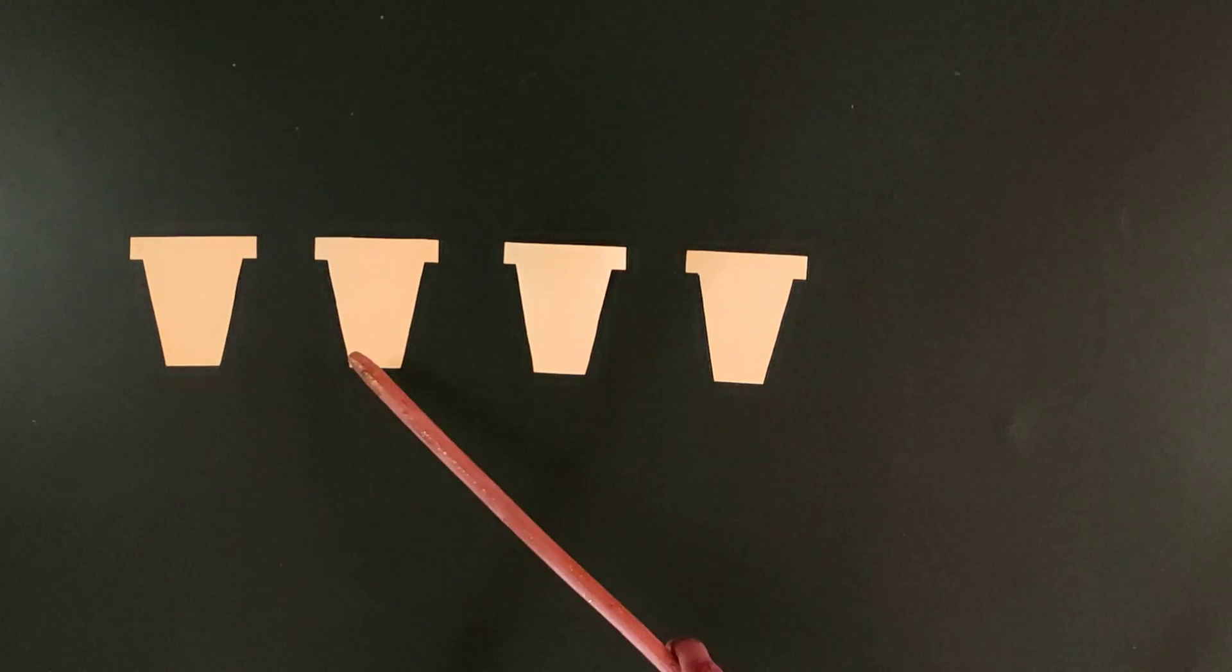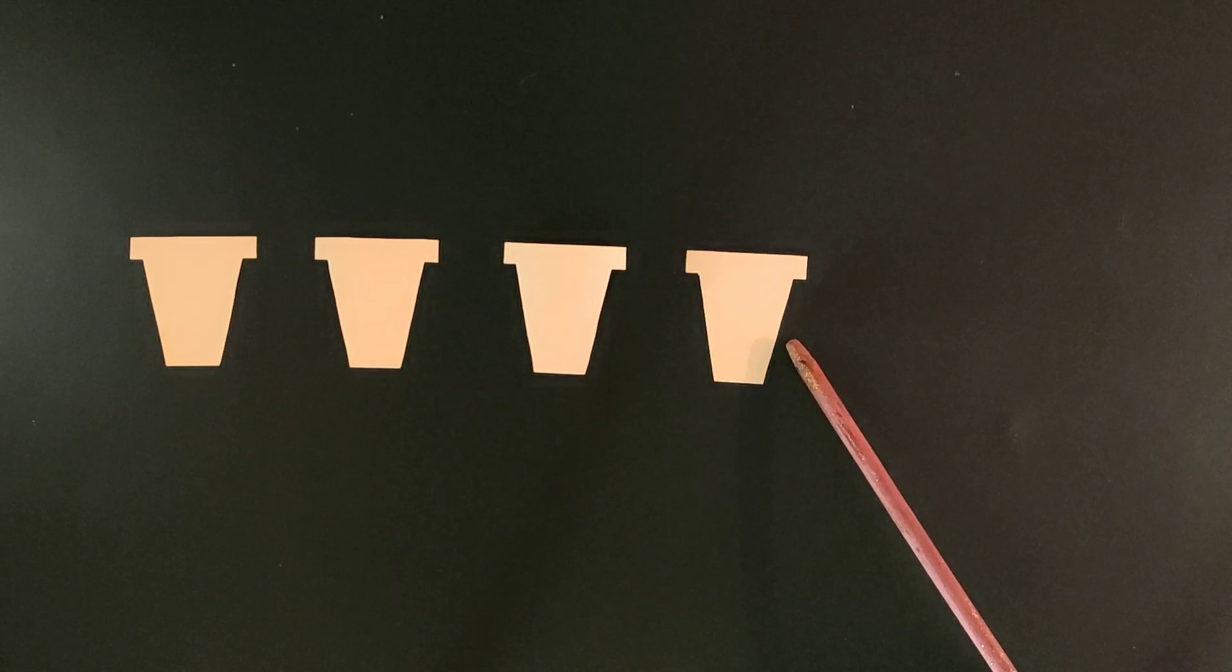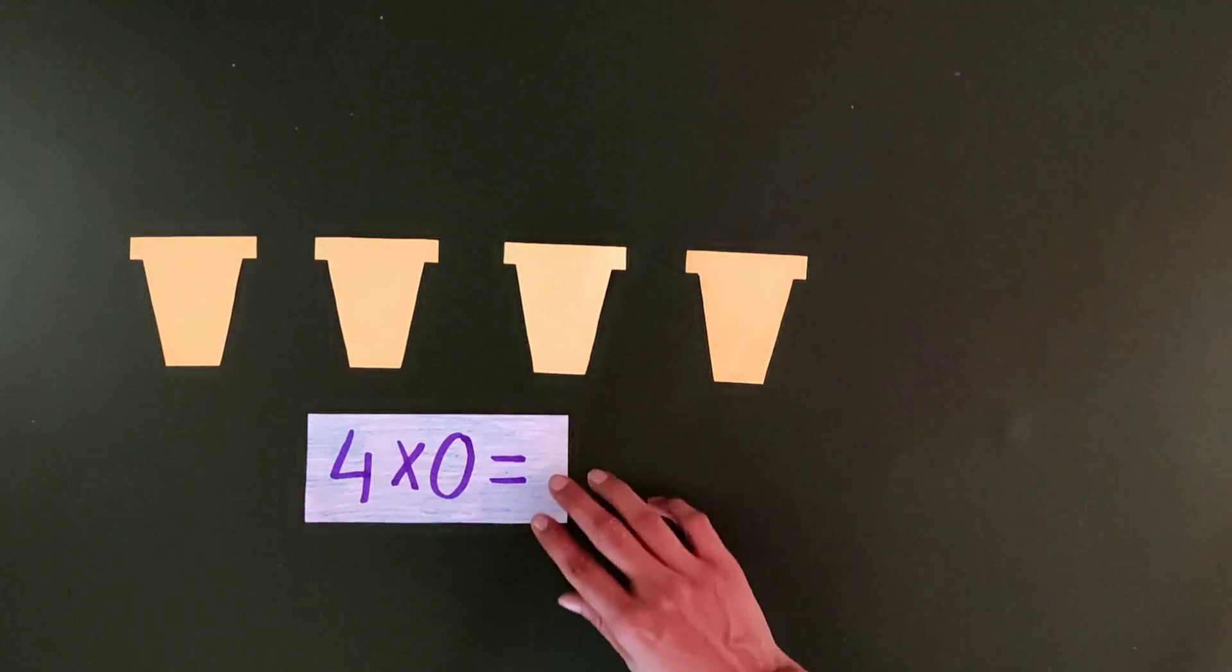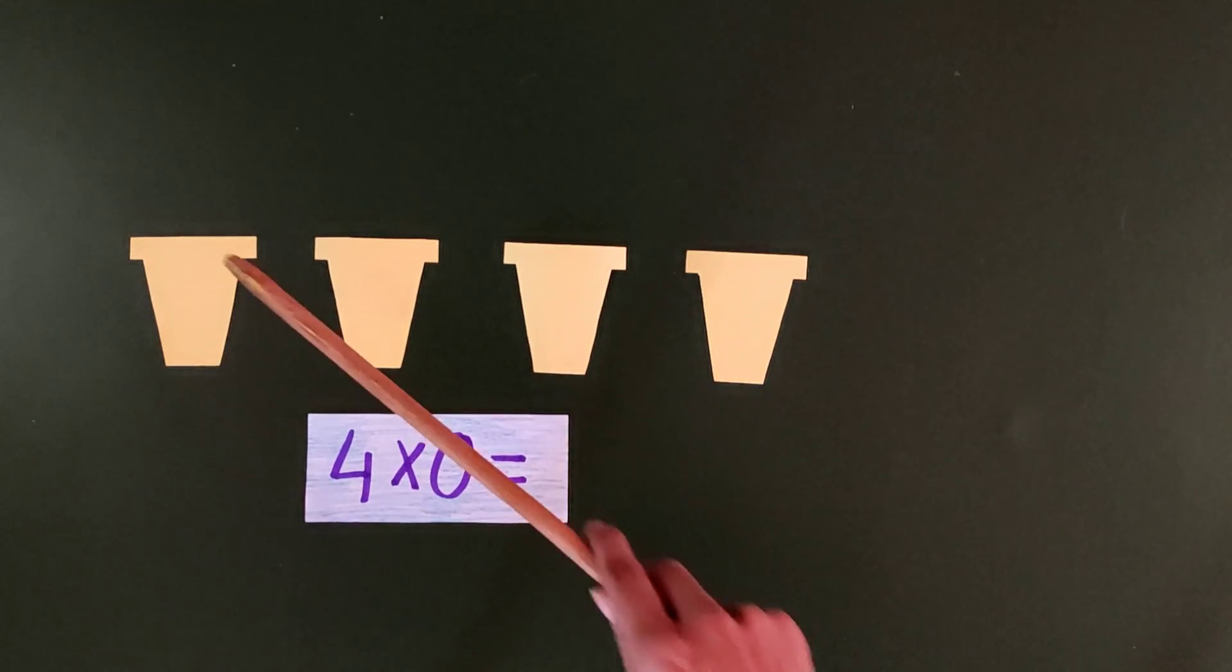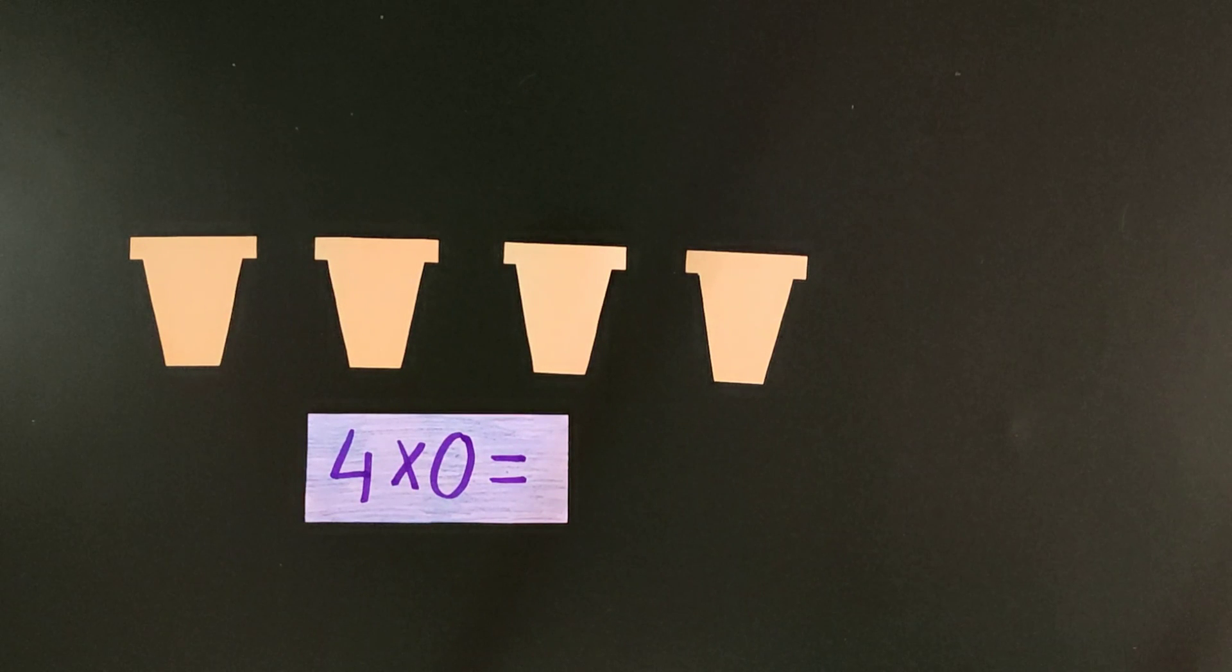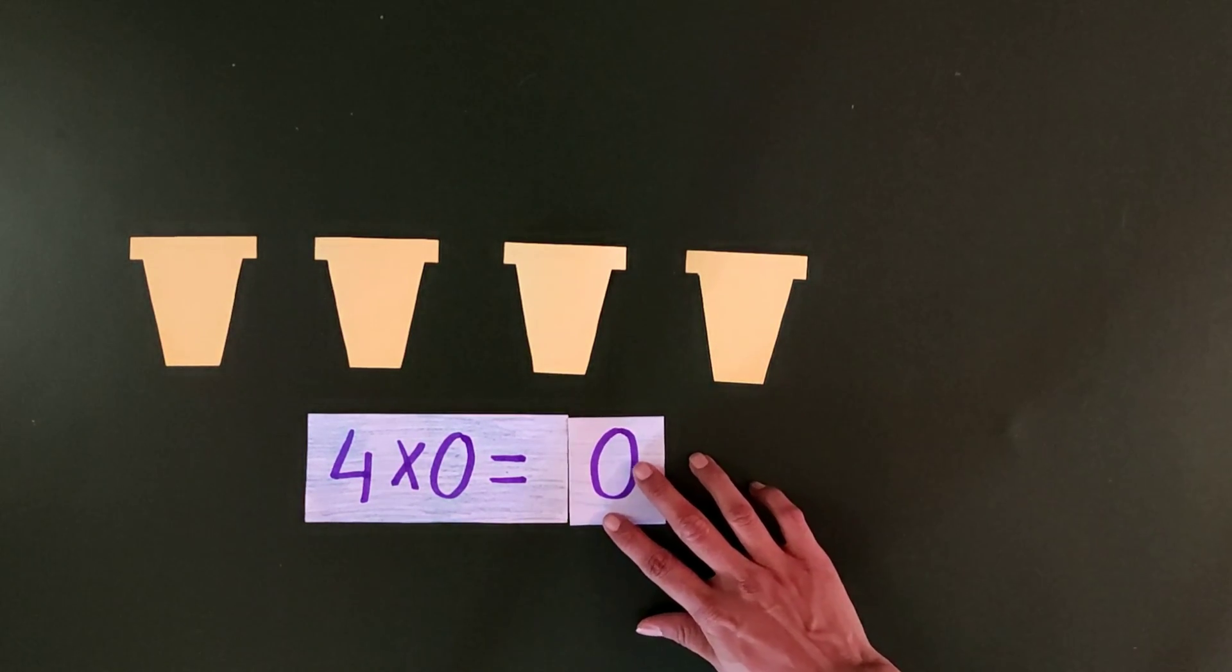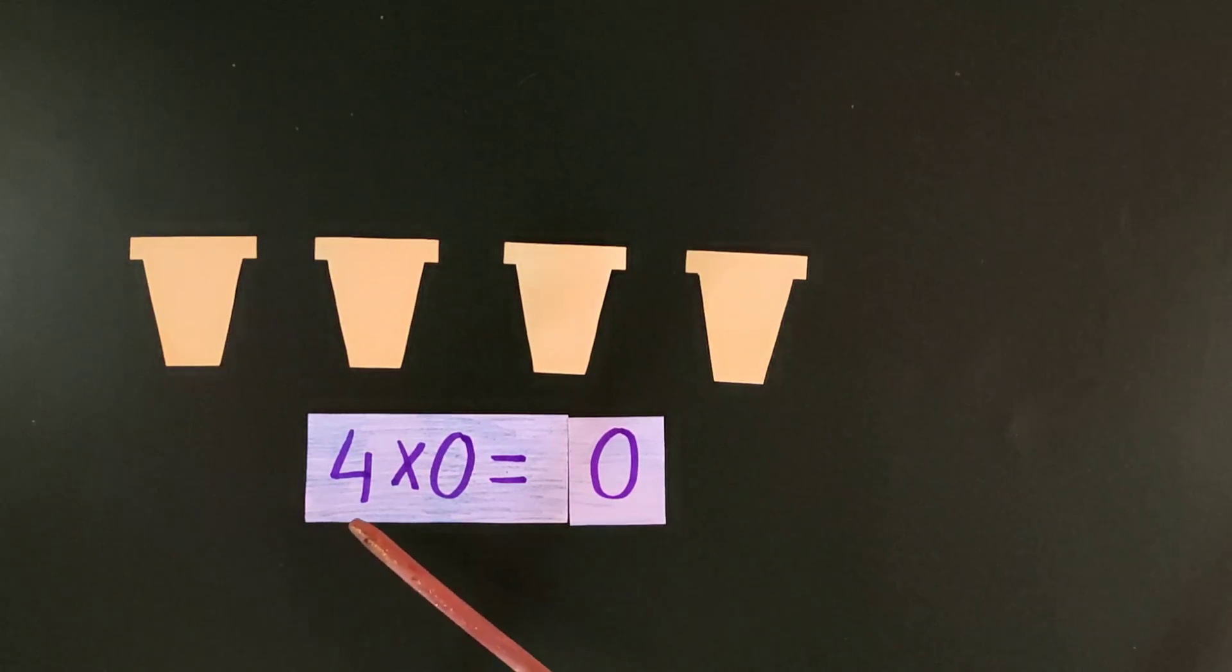Now students here we have 4 flower pots and there are no flowers in them. We can put it as 4 multiplied by 0. Now what's the count of flowers? None, as there are no flowers. So we'll show 0 for the count of flowers. So we learned 4 multiplied by 0 equals 0.